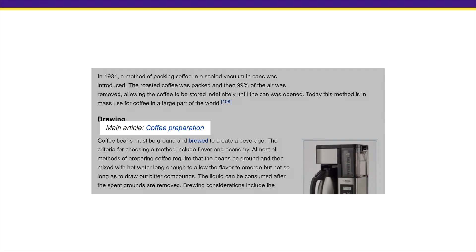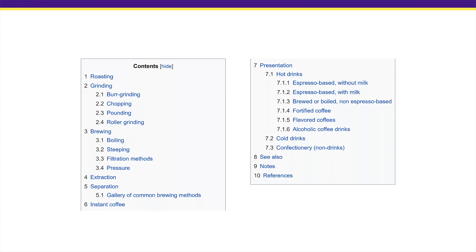You can also click on some of the internal links on the page to check out the table of contents of other closely related entries. For example, on the coffee entry, there's a link to 'coffee preparation.' When you click on that link, you'll notice that the table of contents for the coffee preparation page has even more keywords that you can add to your list.